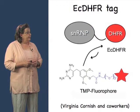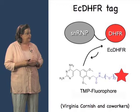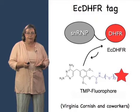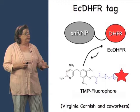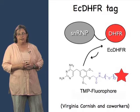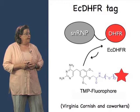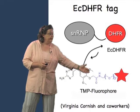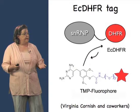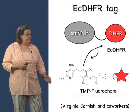The other tag we've been using is the E. coli DHFR — dihydrofolate reductase — tag. Bacterial dihydrofolate reductase binds very tightly to trimethoprim in a non-covalent interaction. Trimethoprim is an inhibitor of E. coli DHFR, but this molecule does not bind to eukaryotic DHFR. So if we tether a dye to trimethoprim, this dye will interact with our DHFR tag and allow us to label that protein. This technology was developed by Virginia Cornish and her coworkers at Columbia University.